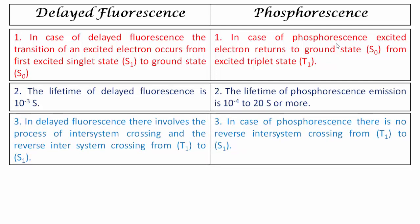The third point of distinction: in delayed fluorescence, the mechanism involves both inter-system crossing and reverse inter-system crossing. Inter-system crossing is the transition from S1 to T1 state, and reverse inter-system crossing is the transition from T1 back to S1 state. In case of phosphorescence, it does not involve reverse inter-system crossing — only inter-system crossing is involved.